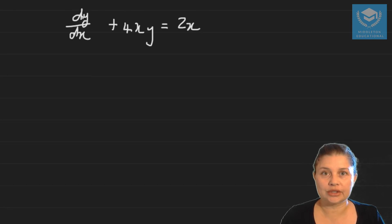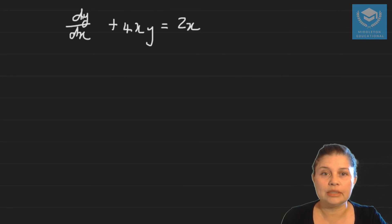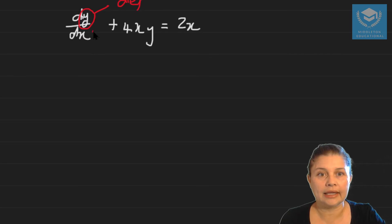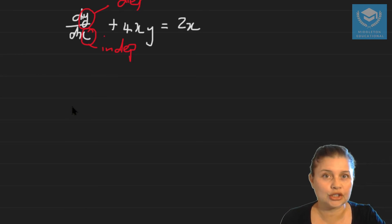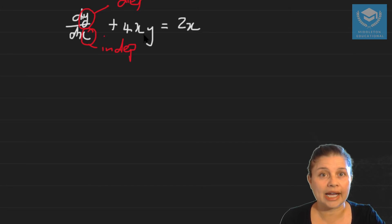So here we have a differential equation. The first thing you always ask yourself is: what is your dependent and what is your independent variable? In this case, we've got y as our dependent variable and x as the independent. This is important because it helps you decide what type of linear differential equation you're working with. Looking at the rest of the equation, you've got a mixture of dependent and independent variables, so you can't use direct integration.